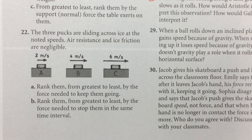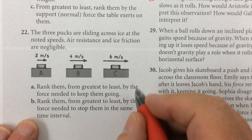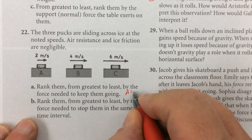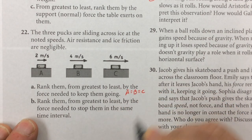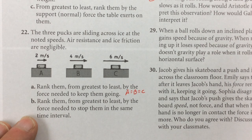So therefore, all of them, this number A, all of them are equal. So A is going to be equal to B is equal to C because once they're moving, there is no force required to keep them moving. They'll never stop unless another force stops them like friction.